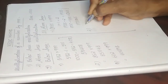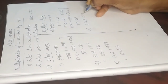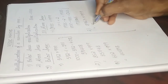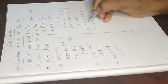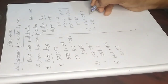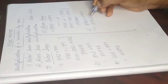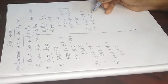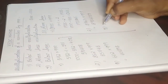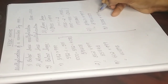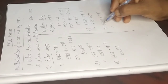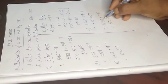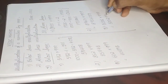Next problem: 8963 into 999. The thousands place digit is 8, add 1 to get 9. Subtract 9 from the number: 8963 minus 9 is 8954. Then 1000 minus 963: 10 minus 3 is 7, 9 minus 6 is 3, 9 minus 9 is 0 — giving 037. So the answer is 8954037. Next: 5008 into 999. Add 1 to the thousands digit: 5 plus 1 is 6. Subtract 6: 5008 minus 6 is 5002. Then 1000 minus 008 is 992. So the answer is 5002992.